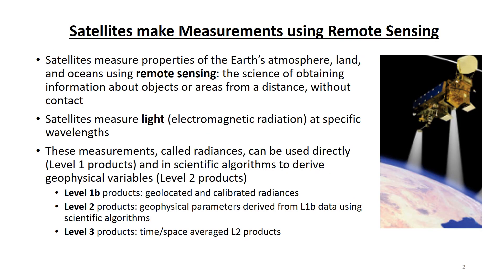Satellites use remote sensing to measure geophysical properties. Remote sensing is defined as the science of obtaining information about objects or areas from a distance without contact. Common examples of remote sensing include cameras, weather radars, and human eyes.